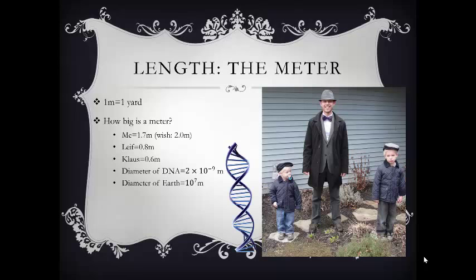On the smaller and larger side of things: the diameter of DNA is around 2 times 10 to the minus 9 meters, so about 2 nanometers — really small. A human hair is around 2 times 10 to the minus 5 meters in thickness. The diameter of the Earth is 10 to the 7th meters. So the range of sizes you'll encounter goes from about 10 to the minus 9 meters up to 10 million meters — a pretty good range for normal, everyday life.